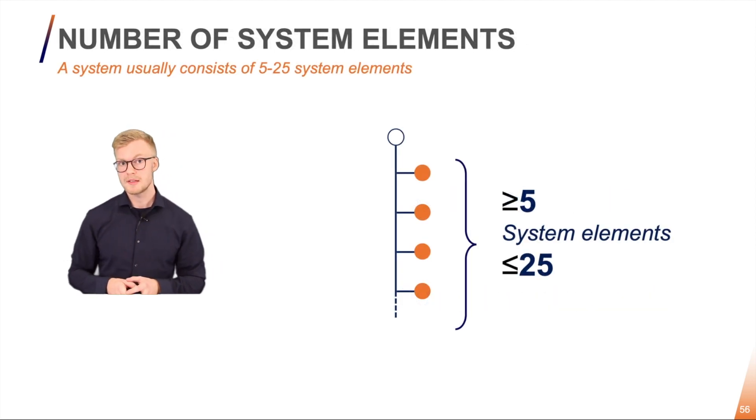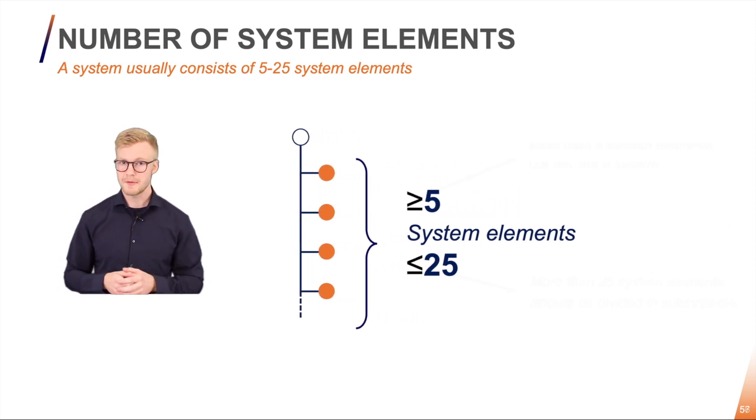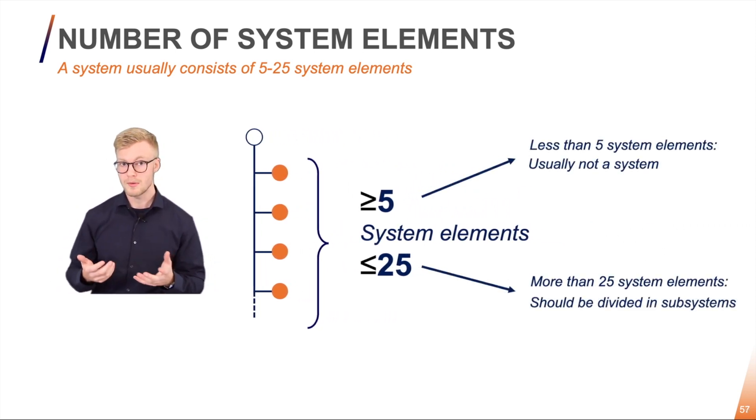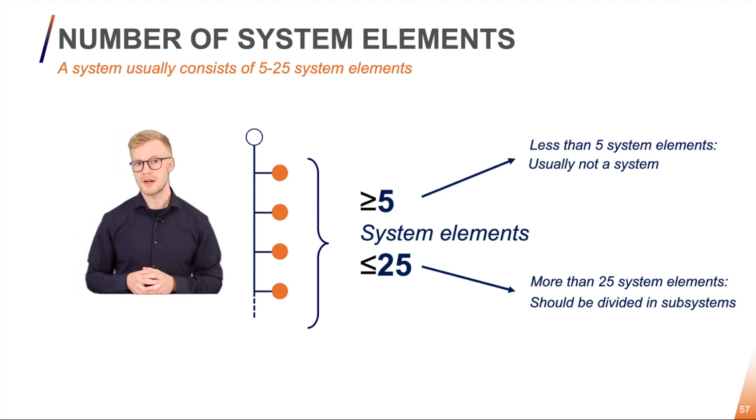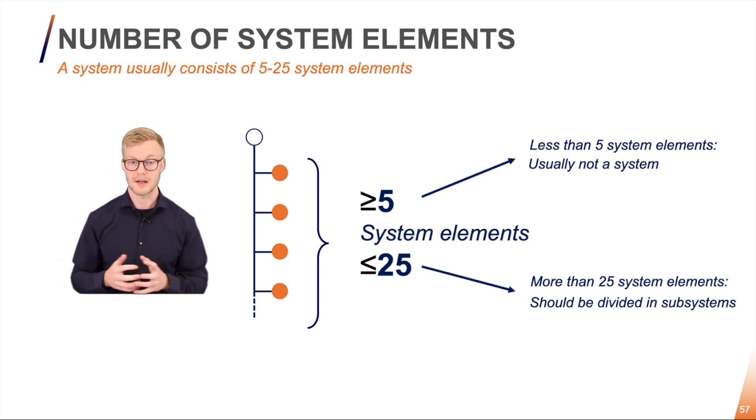Well we recommend to keep it between 5 and 25 system elements. If you find yourself with more than 25 system elements we normally divide it into two systems. If you find yourself with less than five system elements within a system they normally belong to another system. We do this to create better clarity and better structure in our overall system breakdowns.